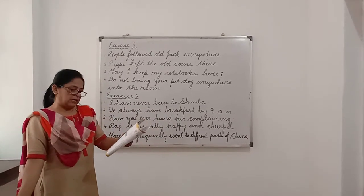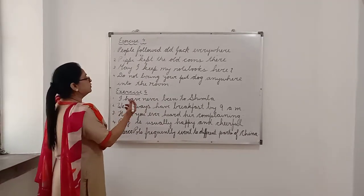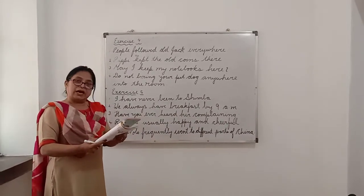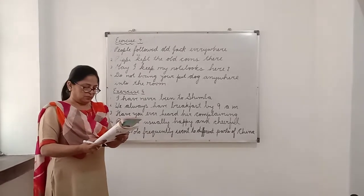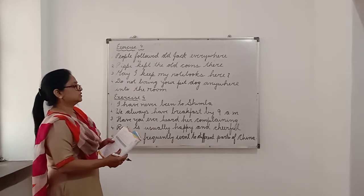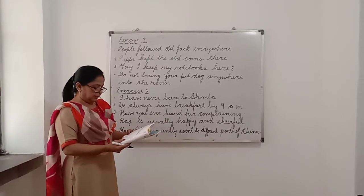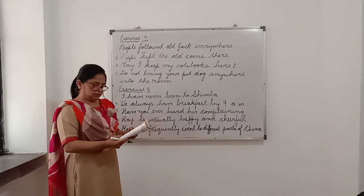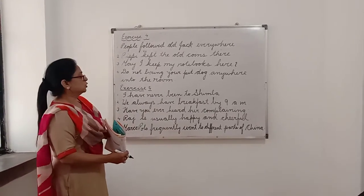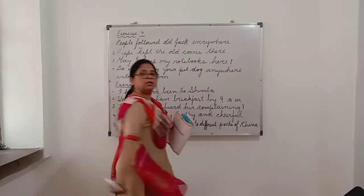The first one is: 'I have been to Shimla' — and we have 'never' in the bracket. So we write it as: 'I have never been to Shimla.' The second one: 'We have breakfast by 9am' — and we have 'always' in the bracket. So we write it as: 'We always have breakfast by 9am.' The third one: 'Have you heard him complaining' — and we have 'ever' in the bracket. So we write it as: 'Have you ever heard him complaining?' — we end it with a question mark because it is a question.